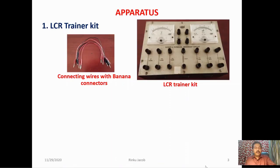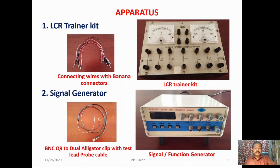Now let me explain the details of the apparatus used for this experiment. One device is the LCR trainer kit and the connecting wires with banana connectors. The other device is a signal or function generator and the BNC Q9 to dual alligator or crocodile clip with test lead cable.